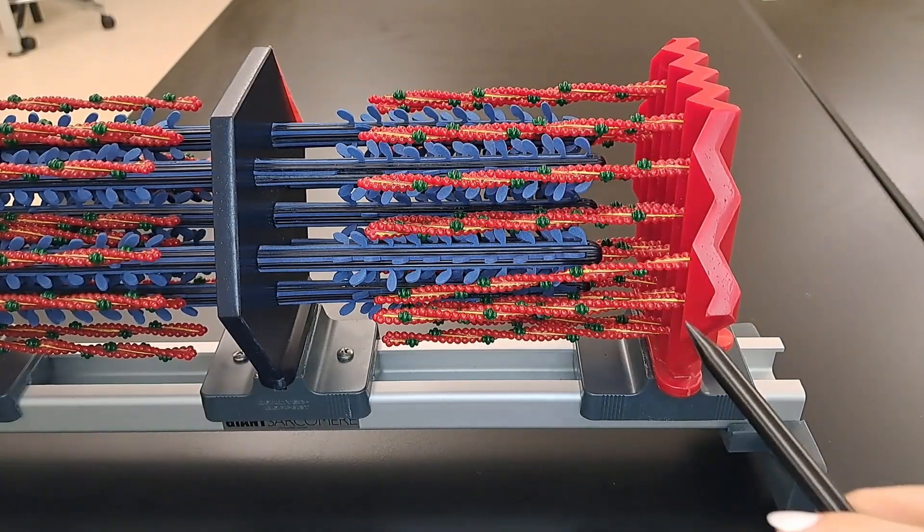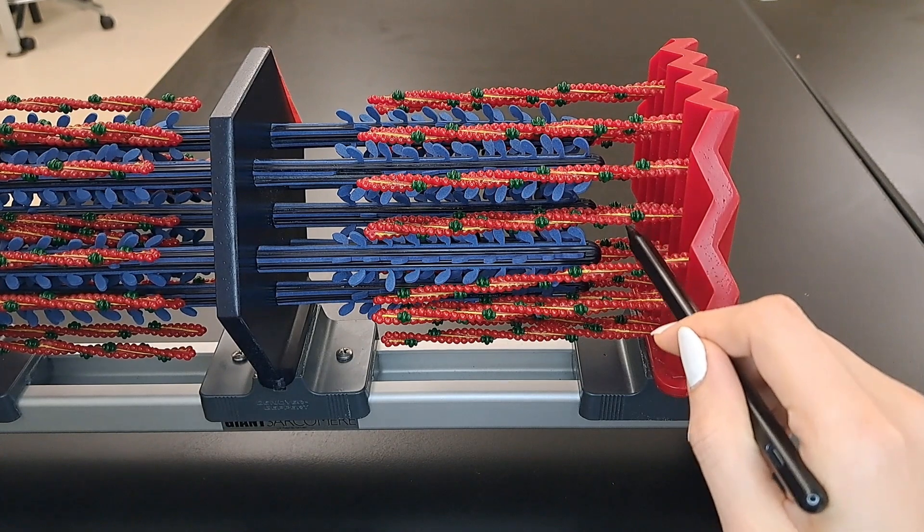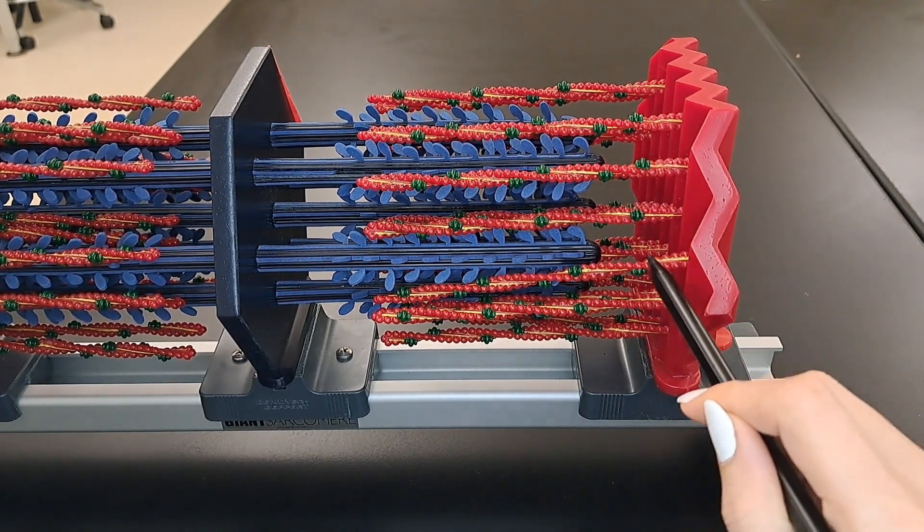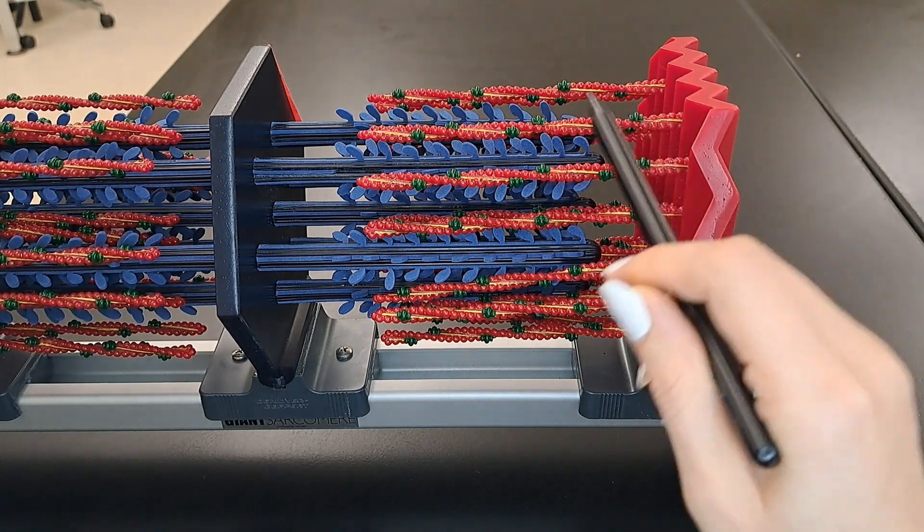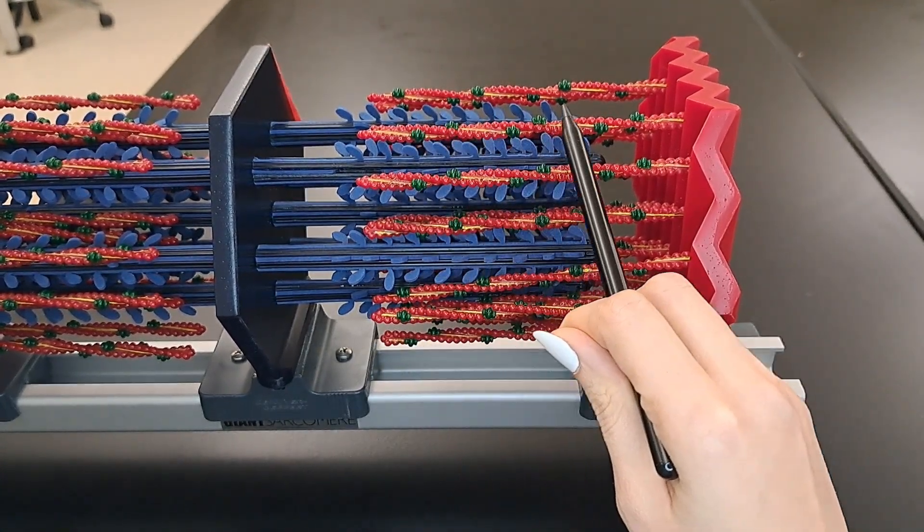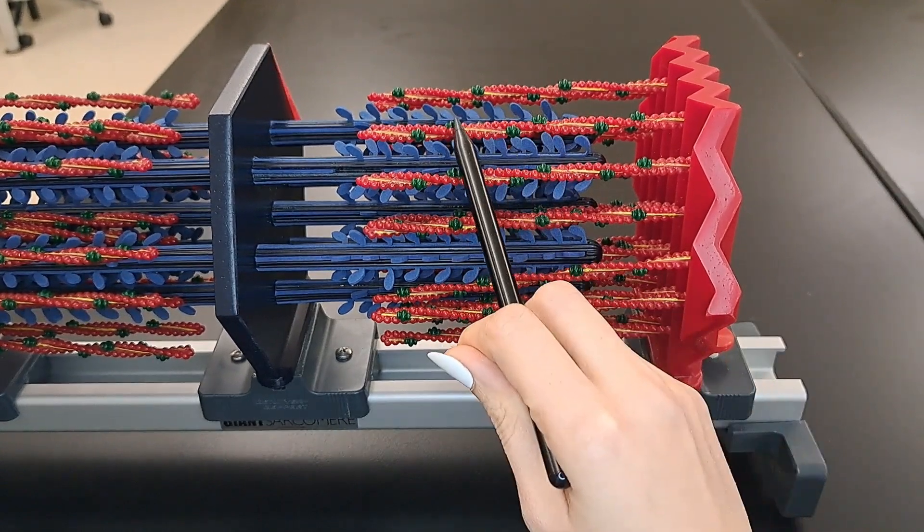So right here we can see part or half of the I band only contains the thin filaments. And this is part of the A band, which contains the thin and the thick filaments.